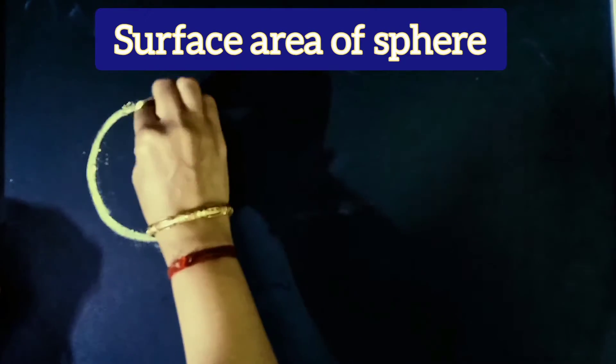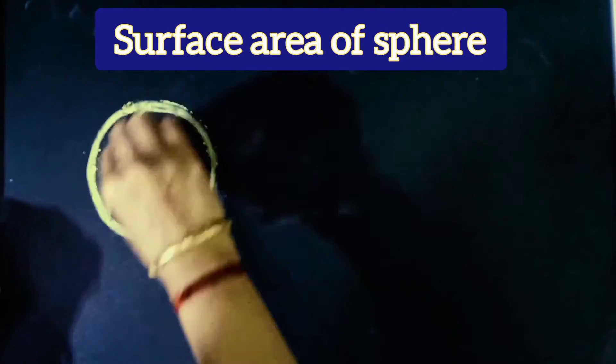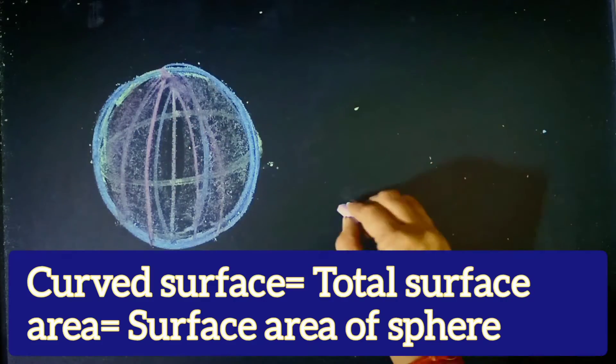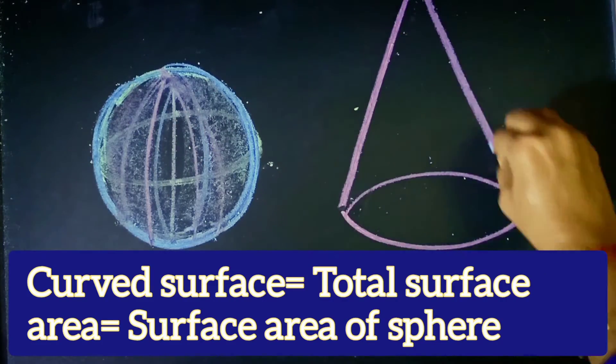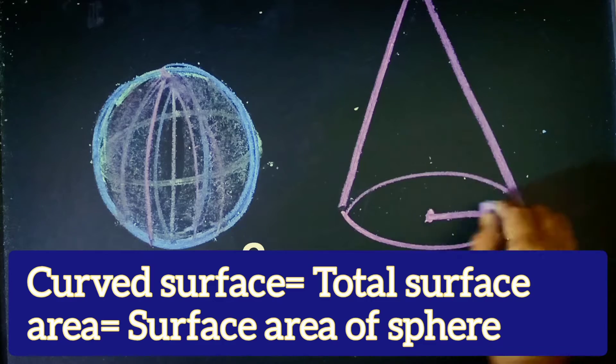What is a sphere? In this video we are going to derive the surface area of a sphere. A sphere is a three-dimensional structure obtained by revolution of a circle along the x-axis. A sphere does not have any flat surface — it has only one surface area, which is the surface area of a sphere, equal to 4 pi r squared.